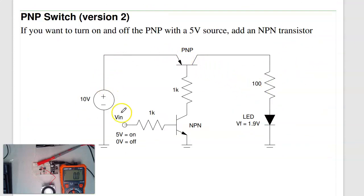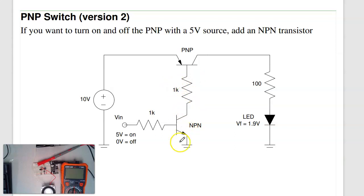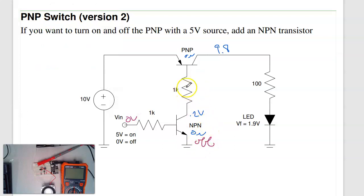If I want to turn on and off a 10-volt source with a 5-volt output, I can do that using a PNP transistor controlled by an NPN transistor. At 5 V input, the NPN turns on, pulling the PNP base to 0.2 V, which turns on the PNP. I get about 9.8 V at the load — a 0.2 V drop. At 0 V input, the NPN is off, no current flows, and the PNP is off. So I can connect the load to 10 V or 0 V using a PNP, but I need an NPN to drive the PNP. It takes two transistors; in ECE320 we typically just use an NPN.